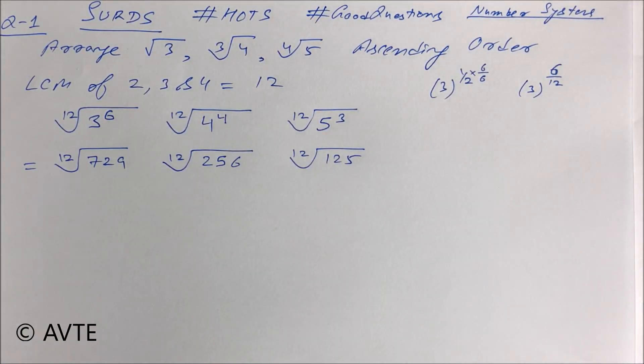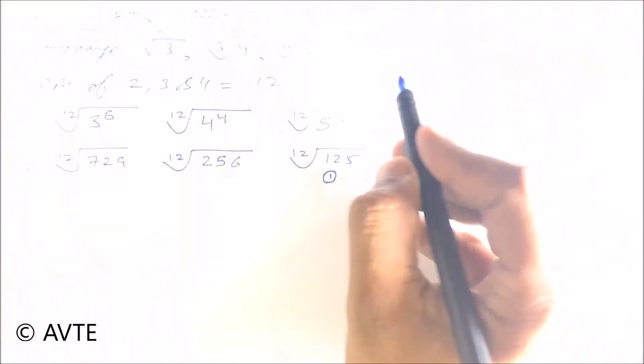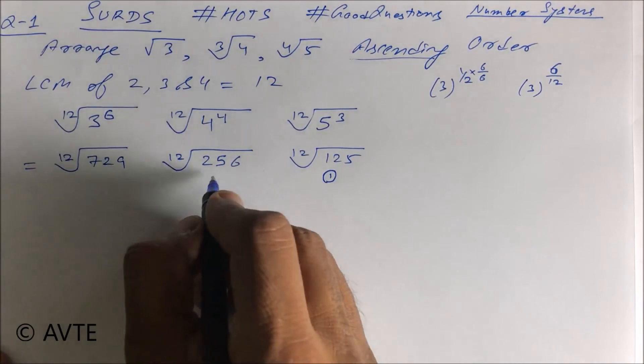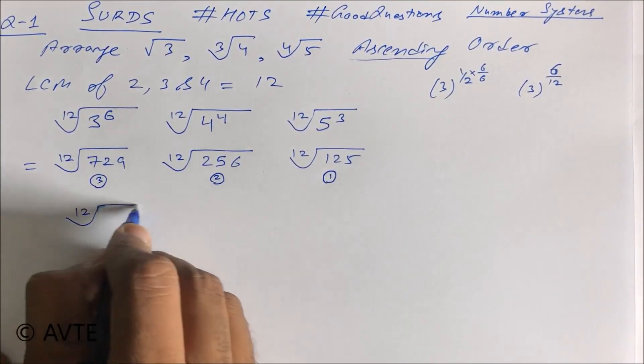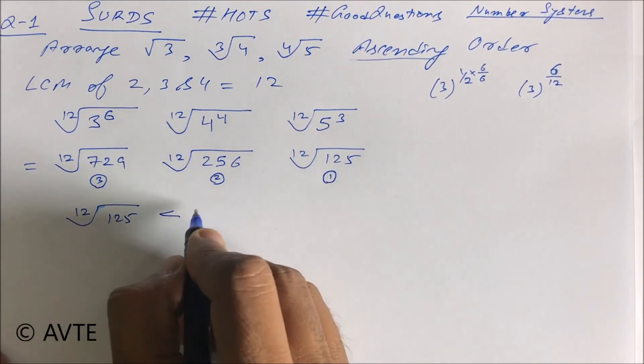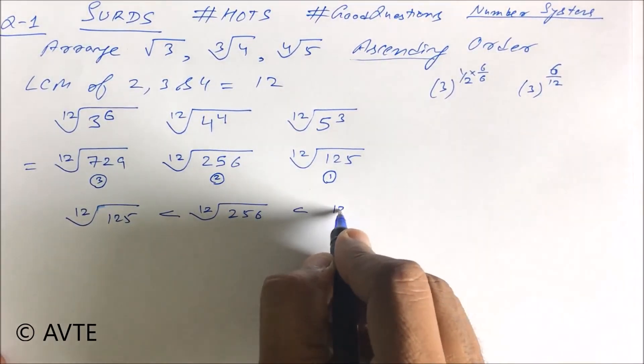So which one is the lower one? The lower one is this, so this is on the first because we have to do it in ascending order. This is your second and this is your third. So ¹²√125 < ¹²√256 < ¹²√729.